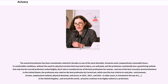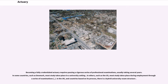In the United Kingdom, and around the world, actuaries continue to be highly ranked as a profession. Becoming a fully credentialed actuary requires passing a rigorous series of professional examinations, usually taking several years. In some countries, such as Denmark, most study takes place in a university setting. In others, such as the US, most study takes place during employment through a series of examinations. In the UK, and countries based on its process, there is a hybrid university exam structure.